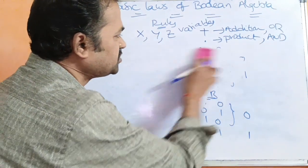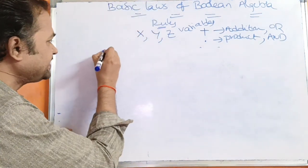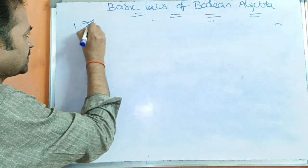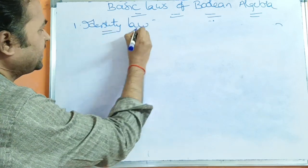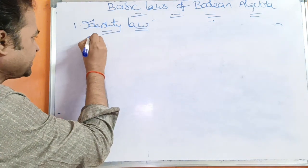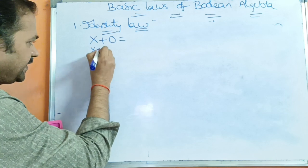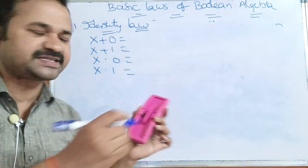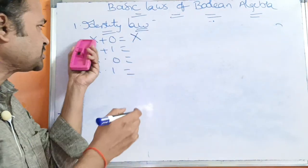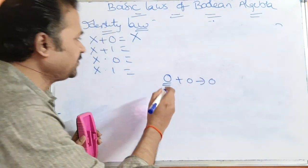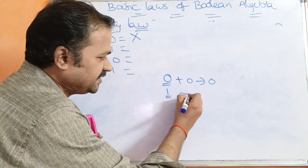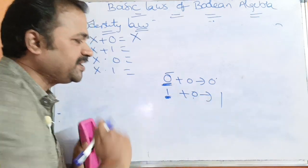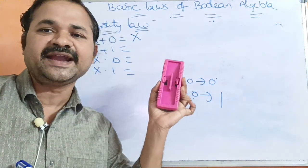Now let us see the basic rules one by one. The first rule is identity laws. With variable x: x plus 0 equals x, because by adding 0 to a variable the result does not change. If x is 0, then 0 plus 0 equals 0. If x is 1, then 1 plus 0 equals 1. So x plus 0 equals x.